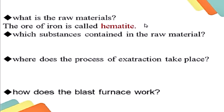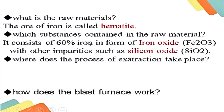The formula of hematite is Fe2O3. The hematite consists of about 60% iron oxide, Fe2O3, along with other impurities such as silicon dioxide. That is the composition of the ore.